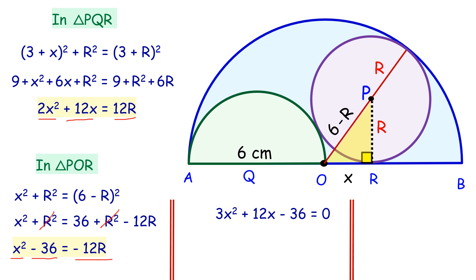We will solve it by splitting the middle term. 3 times 36 is 108. We have to split 12X so that product is 108. 12 will split as 18 and minus 6. Factorizing it, X is coming as negative 6, which is not possible. Thus the value of X is nothing but 2.